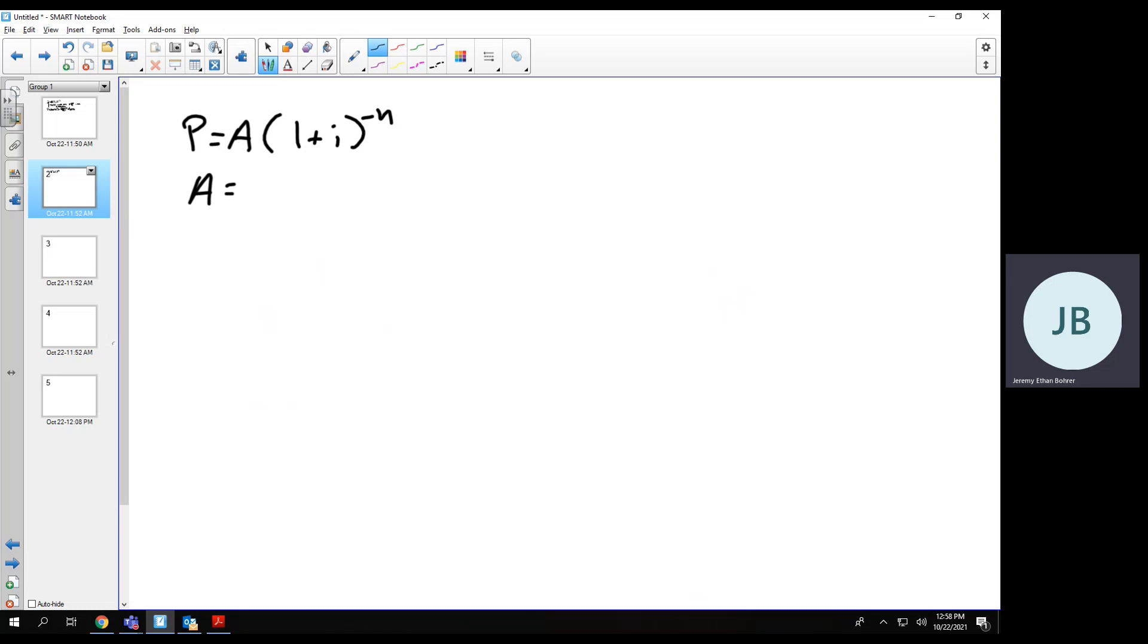Here, A is 49,158.60. T equals 5. R equals 0.10. So i is going to be, we're doing this quarterly, so that's 0.10 over 4, which is the same as 0.025. And n is 5 times 4 or 20.